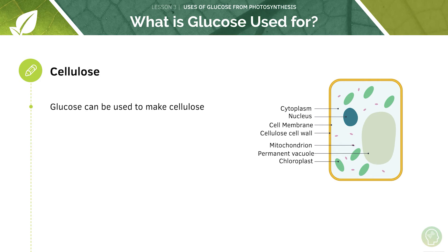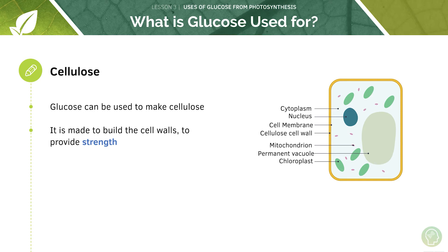Glucose can also be used to make cellulose. Plant cells have a cell wall structure around the outside of their cell membrane, whereas animal cells do not have this. The cell wall is mainly formed of cellulose, so we need to manufacture cellulose somehow, and that's where glucose comes in.